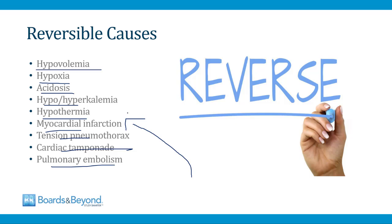If you can figure out, for example, that the patient is likely severely volume depleted, you can treat that by giving volume — same thing for the other causes on this slide. When involved in a cardiac arrest, I'm making sure someone is doing chest compressions and that we're checking the rhythm and delivering shocks, but in parallel I'm thinking about these reversible causes to see if one of them likely caused the cardiac arrest and is potentially treatable.